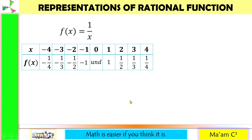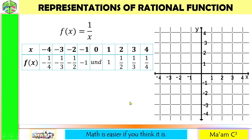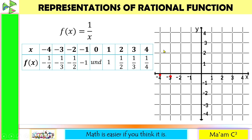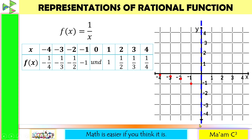Let's have our Cartesian plane. All we have to do is plot the points from our table. If x is negative 4, f(x) is negative 1/4. For x = negative 3, f(x) is negative 1/3. For x = negative 2, f(x) is negative 1/2, right at the middle of 0 and negative 1. Then x = negative 1 gives f(x) = negative 1. If our x is 0, the value of the function is undefined, meaning we do not have a graph at x = 0. Let me draw a vertical dashed line here — this is called an asymptote. You will learn more about this in our succeeding lessons.